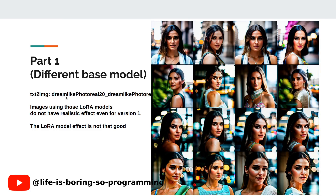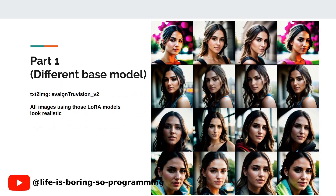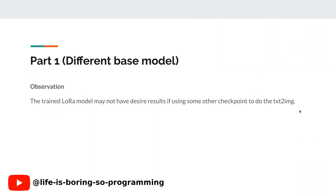We will now try to see the results using Dreamlike Photo Real as the text-to-image checkpoint. All images have strong contrasts — the effect of the LoRA is very strong — but the images do not look like the target. The results are not that good. Finally, we will try using Avalon TrueVision as the text-to-image checkpoint. I believe that Avalon TrueVision is similar to Realistic Vision, so they give similar results, and the results look normal and good. The results in the first column are almost the same as in version 1. After this experiment, we can see that the trained LoRA model may not have desired results if we use some other checkpoints to do the text-to-image. The results depend on the training base model and the checkpoint you choose.